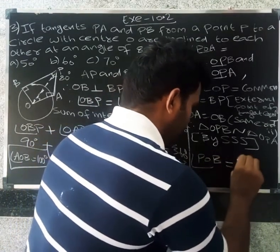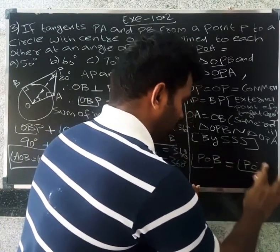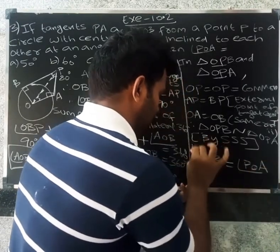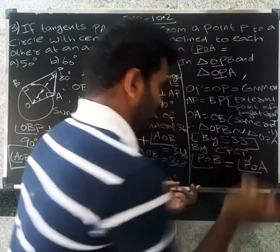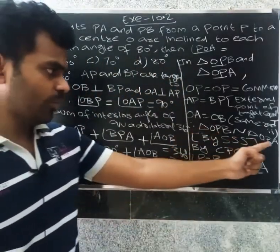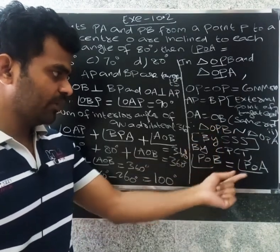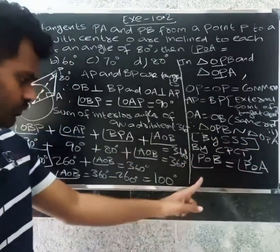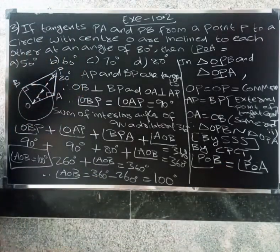By CPCT, angle POB equals angle POA. So angle POB equals angle POA.